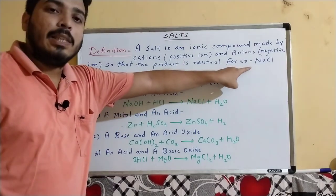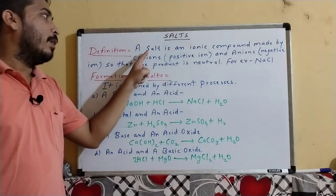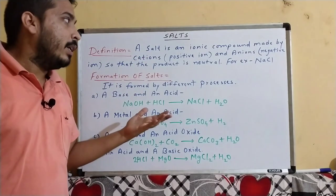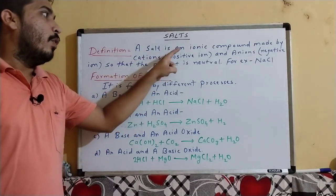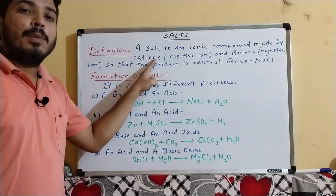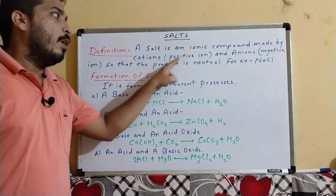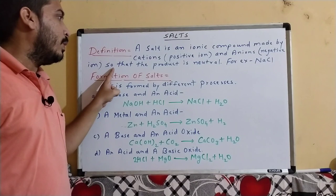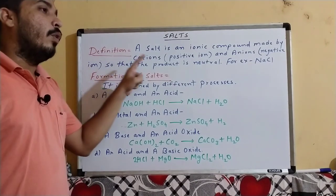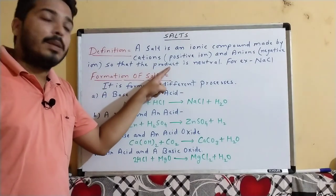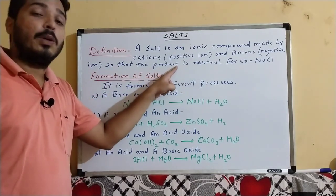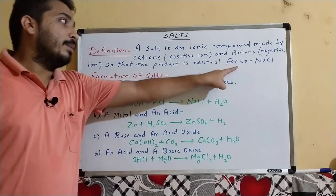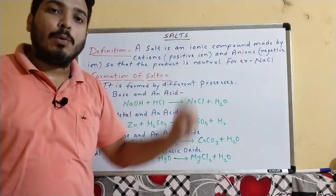For example, NaCl. Salt is an ionic compound made by cations, which means positive charge, and anions, which means negative charge. The product becomes neutral, which means no net charge. The biggest example is NaCl, sodium chloride.